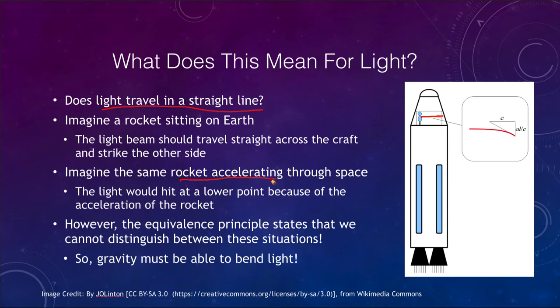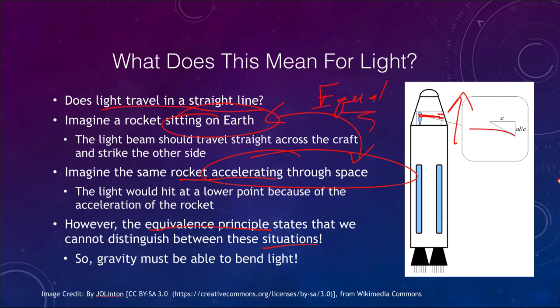Now that makes perfect sense to us. But let's imagine the same rocket accelerating through space. Well, in this case, the light would hit at a lower level. Because if this rocket is traveling through space, the rocket is moving upward now. So in the time that it takes the light to travel from the person across to the wall, the rocket will have moved up a small amount and therefore the light beam will hit further down in this case than it would have in the first case.